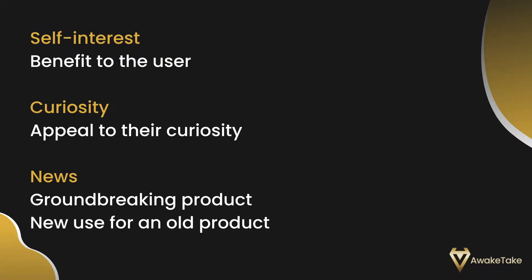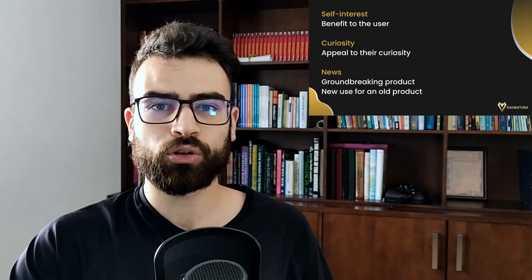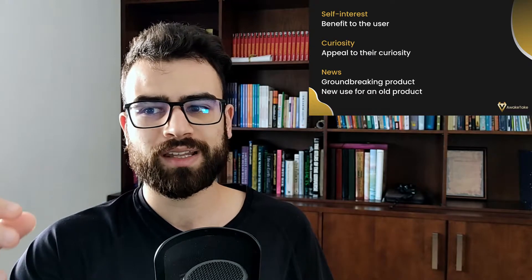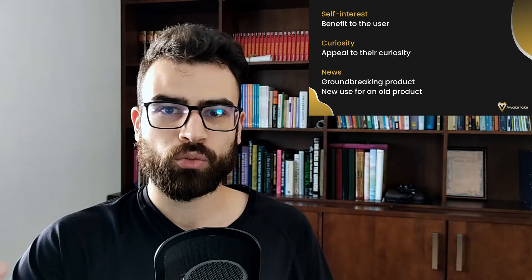First I'm going to kick off with some headline categories. Headlines can fall into one or more of these depending on the elements included. Most of the time you will see headlines that fall into one or more of these categories, which are self-interest, curiosity, and news. Self-interest is where you state what's the benefit to the user, usually in the form of a promise — essentially what they want and how to get it. This is the most straightforward and also the most effective type of headline when used by itself.